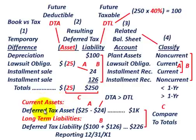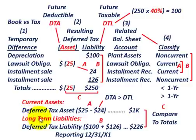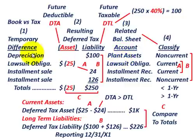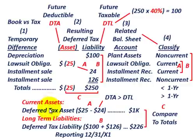You have to determine your deferred tax asset or liability based on classification — either current, reported under current assets, or non-current, reported under long-term liabilities on the balance sheet. Everything goes back to the related balance sheet account for your temporary difference, which drives whether it's classified as current or non-current.